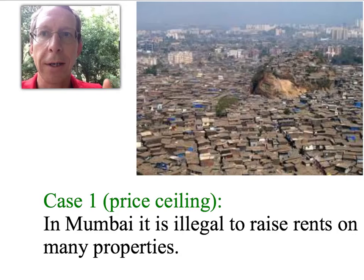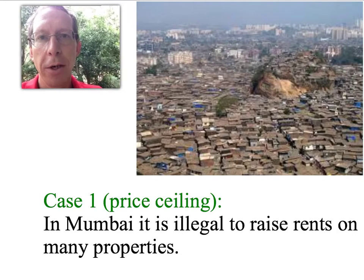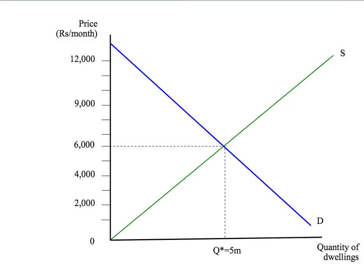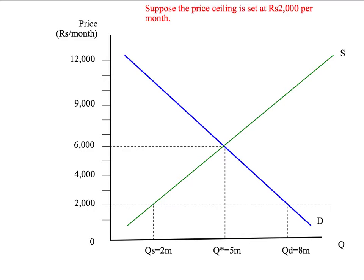The policy we're going to look at today is one of our old favorites: price controls on rent in the city of Mumbai, India. We start with a normal supply and demand diagram — upward sloping supply for dwellings, downward sloping demand for dwellings — with quantity of dwellings on the horizontal axis and price or rent in rupees per month on the vertical axis. The competitive equilibrium is a rent of 6,000 rupees per month with 5 million dwellings rented.